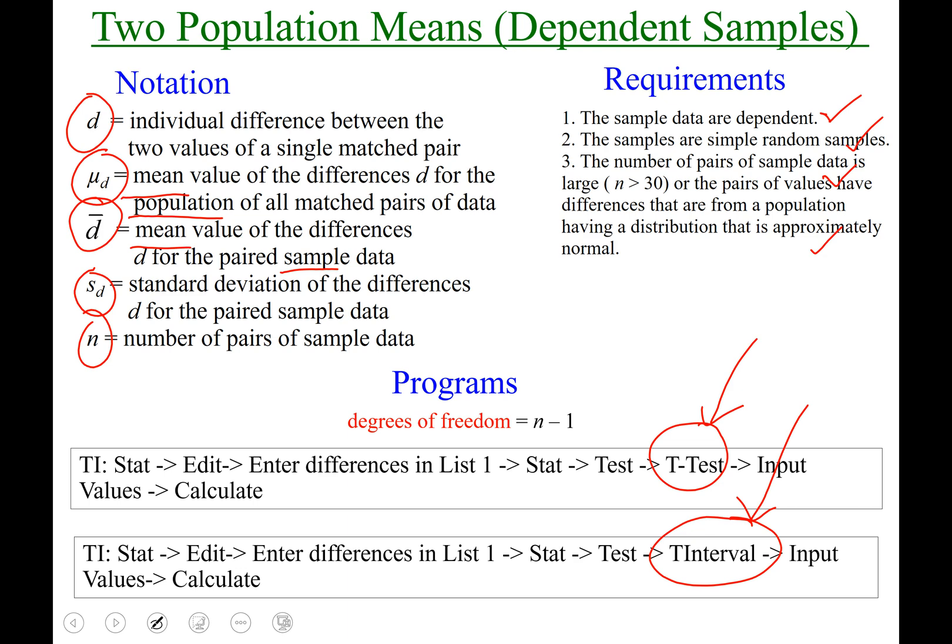And the answer to that is, yes, we are dealing with two populations, but we're really interested in the differences of the paired sample values. So really, we're only looking at one list.